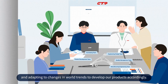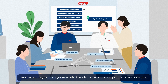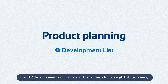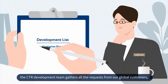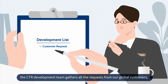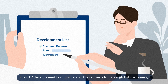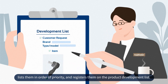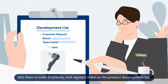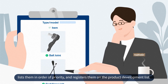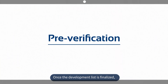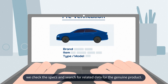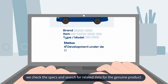Before we plan for developing new products, the CTR development team gathers all the requests from our global customers, lists them in order of priority, and registers them on the product development list. Once the development list is finalized, we check the specs and search for related data for the genuine product.